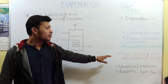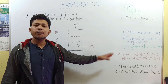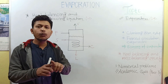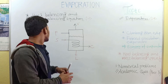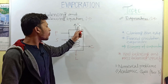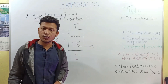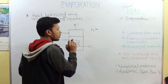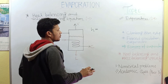For heat balancing and mass balancing, first you have to know what balancing means. Balancing means something has input and something has output, and input equals output — that is balancing. Here we balance feed input and steam input with vapor, condensate, and concentrated product output. Let's consider h equal to enthalpy present in every substance.